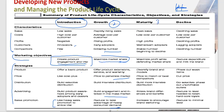The third stage, maturity, sees sales costs decline due to economies of scale, while higher profits come in. Mainstream adopters dominate and the number of competitors starts to stabilize and then decline as the market matures.